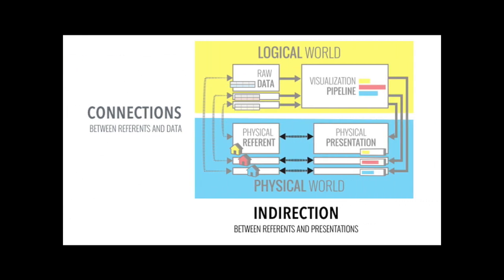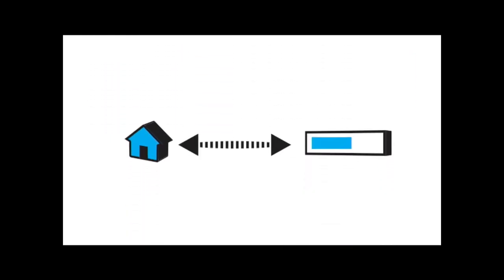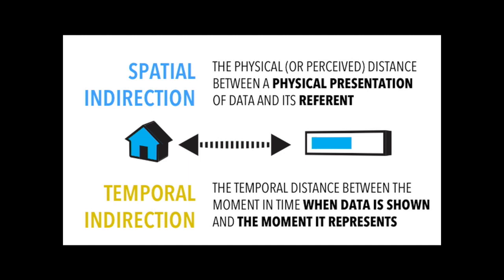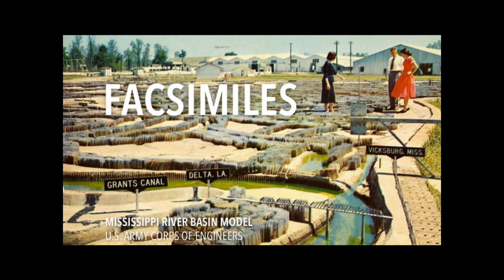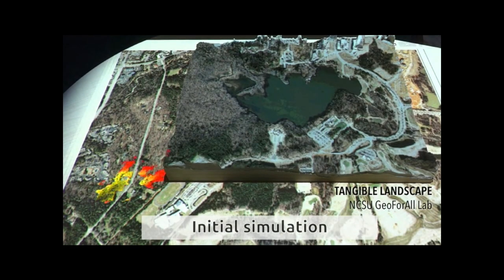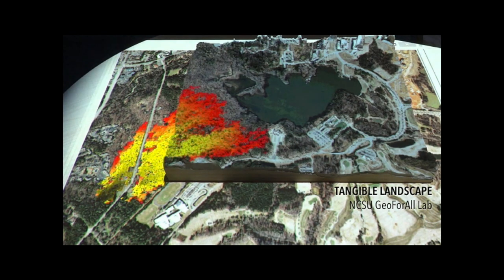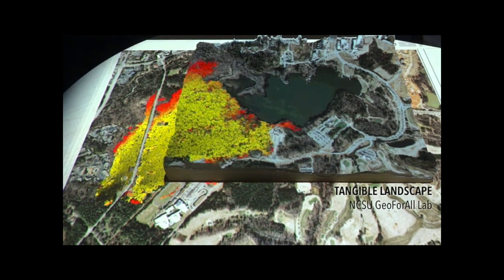Similarly, we can consider the indirection between reference and presentations in a number of ways — for example, minimizing the spatial indirection by placing them physically close together, or also considering temporal indirection between the two. There are cases where physical reference might actually be so large, so small, or so distant that it's really difficult to see and manipulate them, and we might want to consider facsimiles — things like this model of the entire Mississippi River Delta created by the Army Corps of Engineers that can serve as human-scale stand-ins for reference that just aren't perceivable using our standard faculties. The tangible landscape work from folks at North Carolina State provides a handheld or tabletop-sized analogy, making the landscape more visible and reachable, though you may lose information about the real environment and the ability to take action in it immediately.